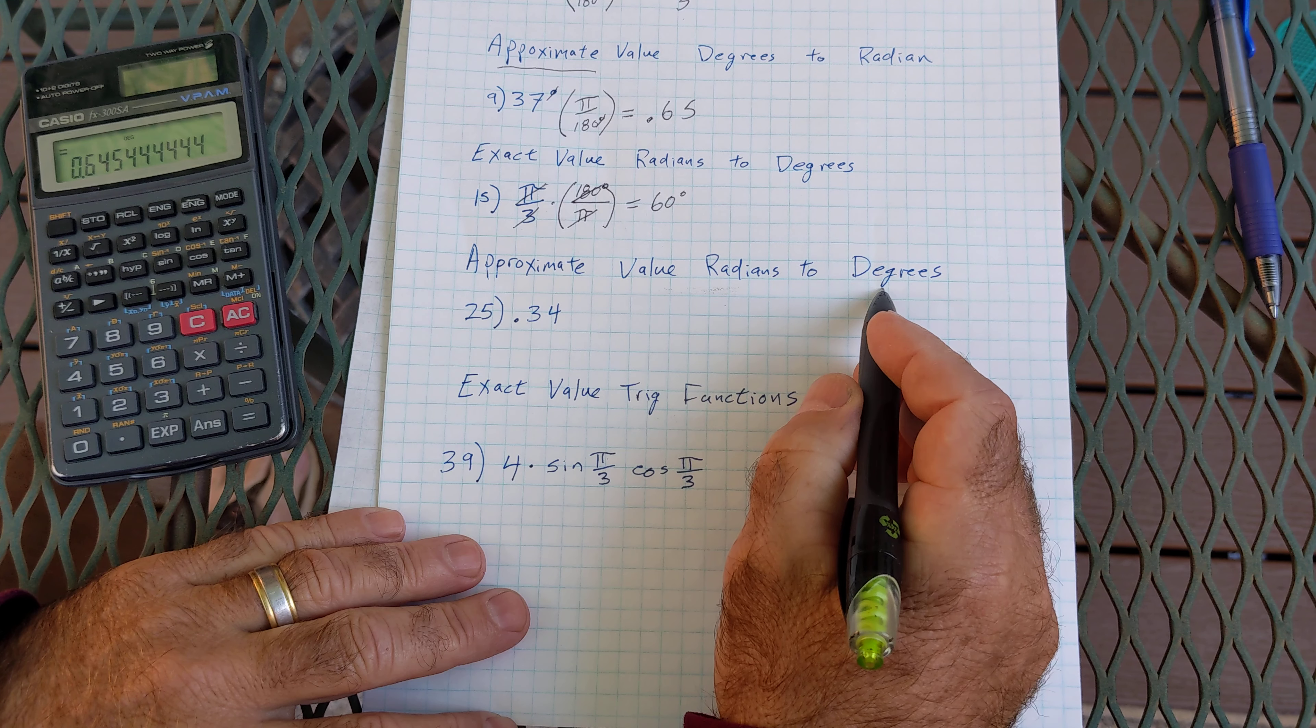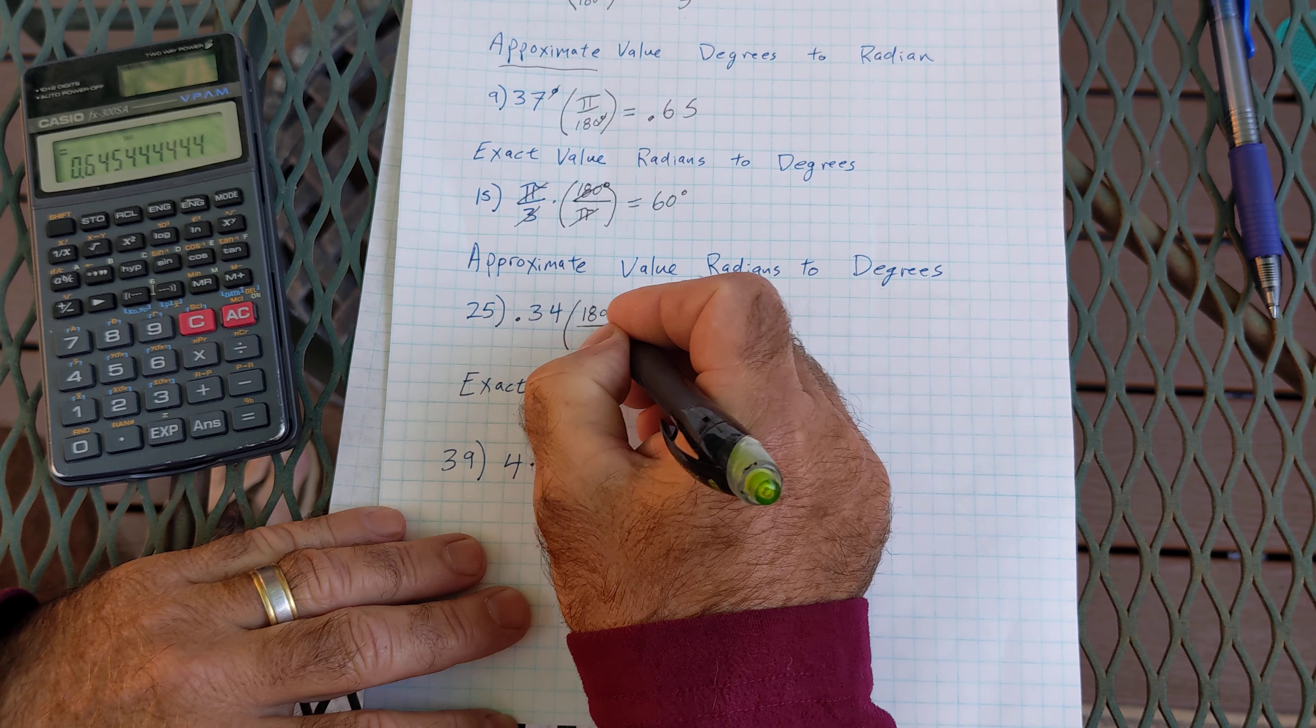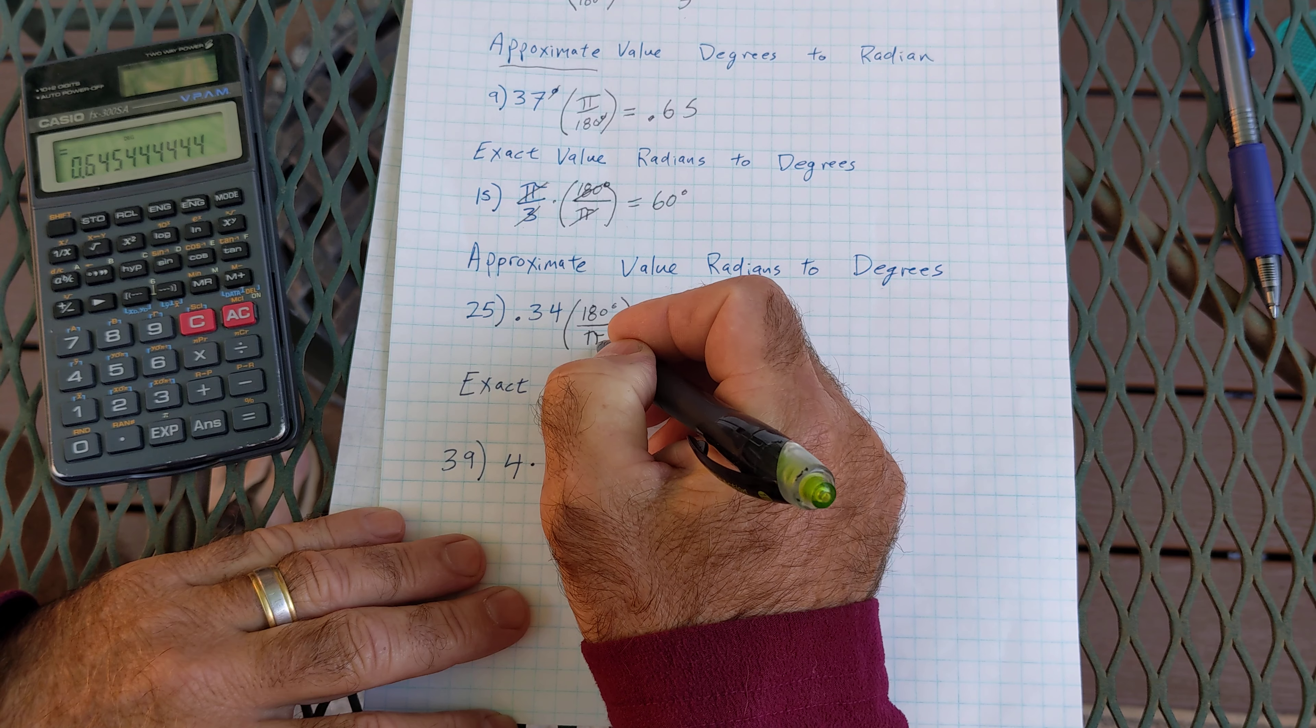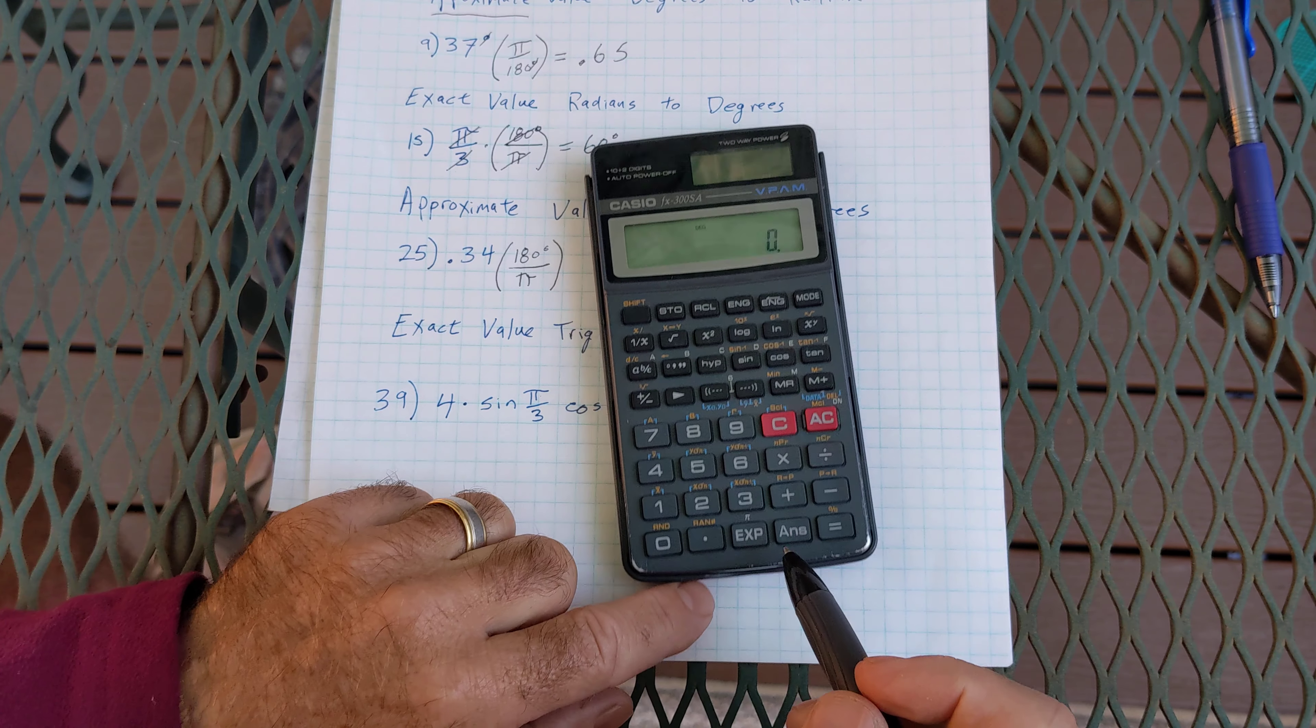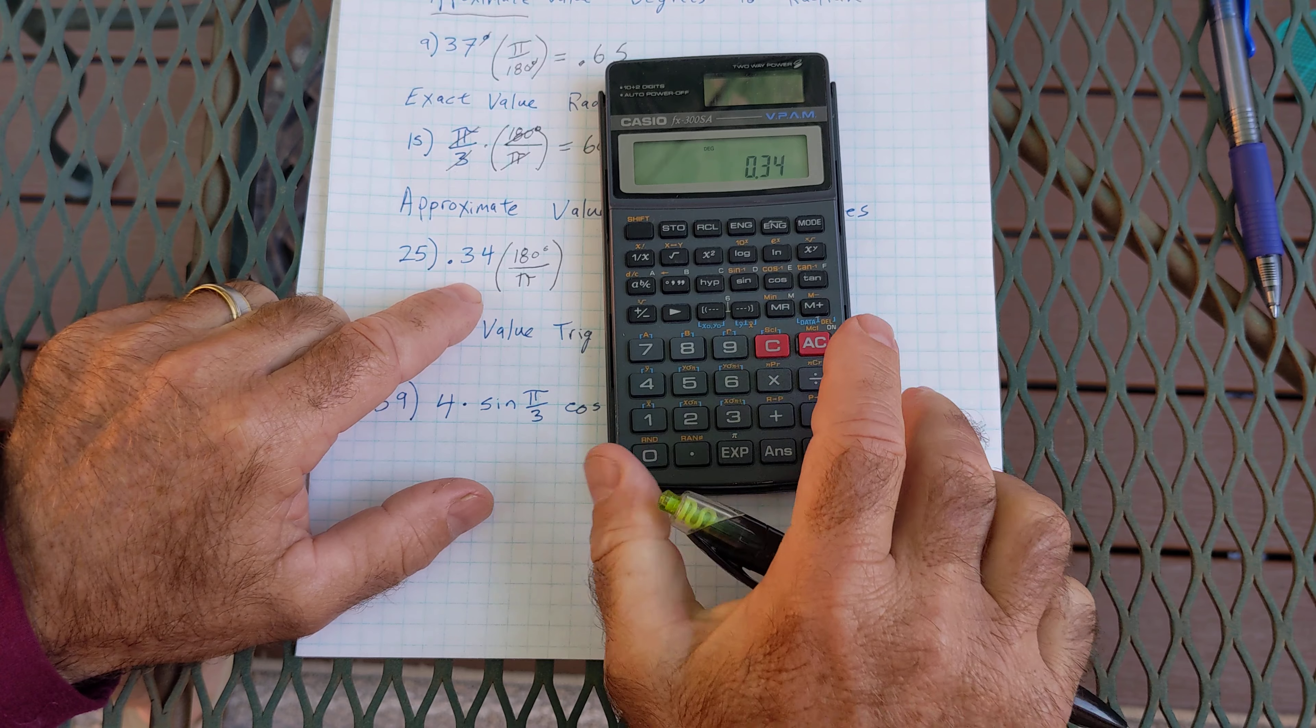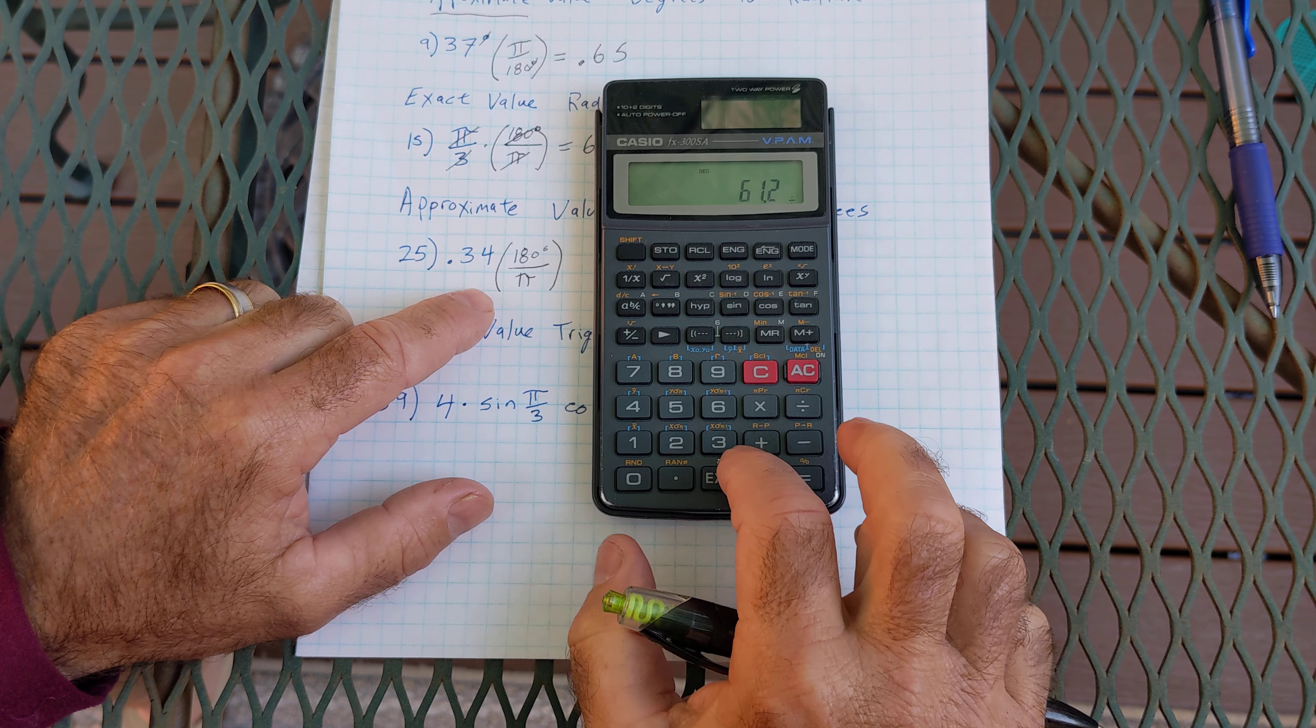Approximate value radians to degrees. I still multiply by 180 degrees over pi radians. And then this is just a number, right? It's not a variable or anything. So I just use the pi key on my calculator. Oh, there it is down there.